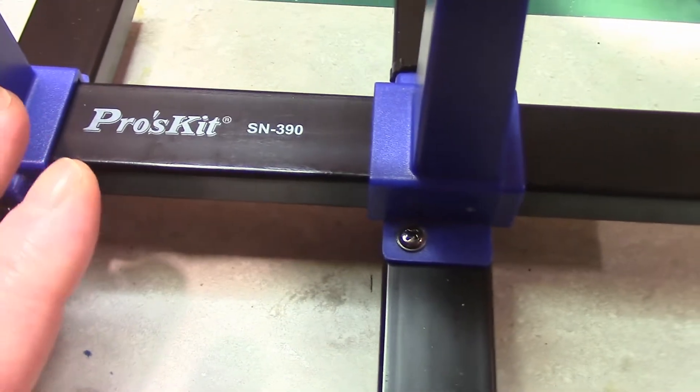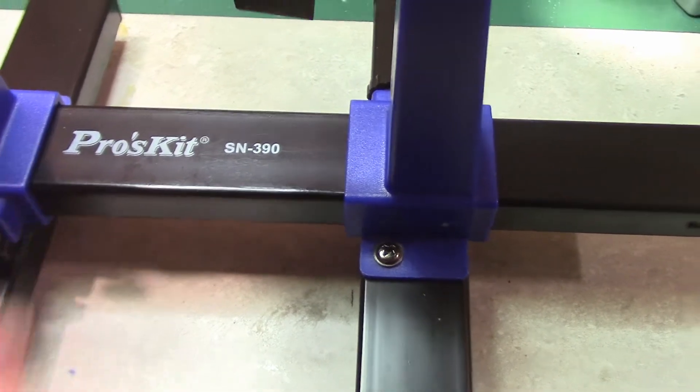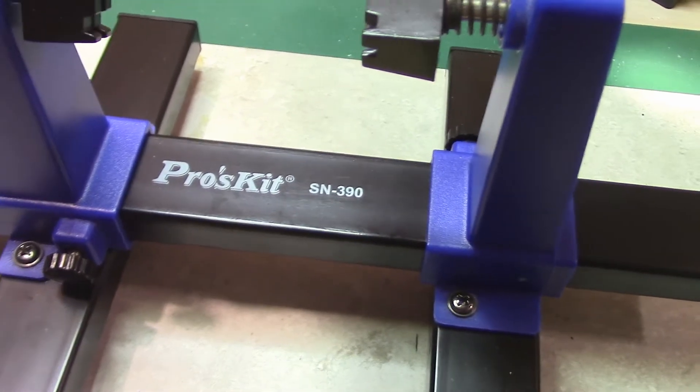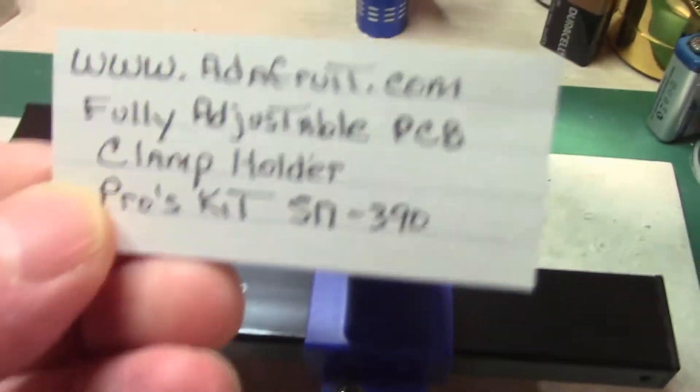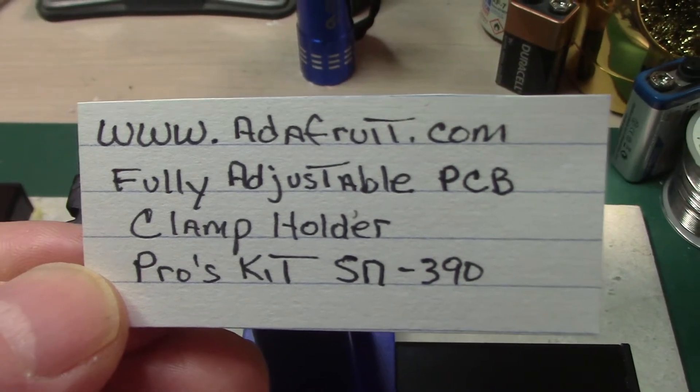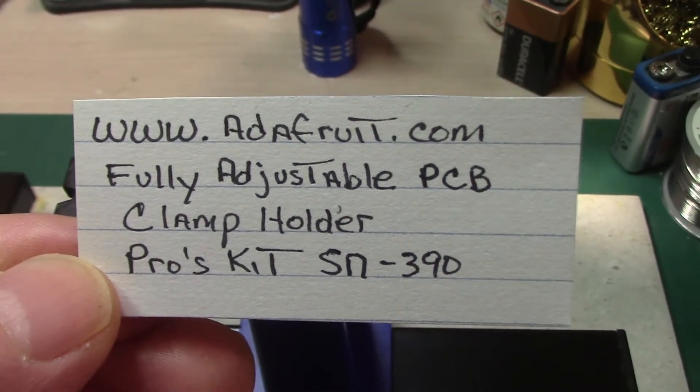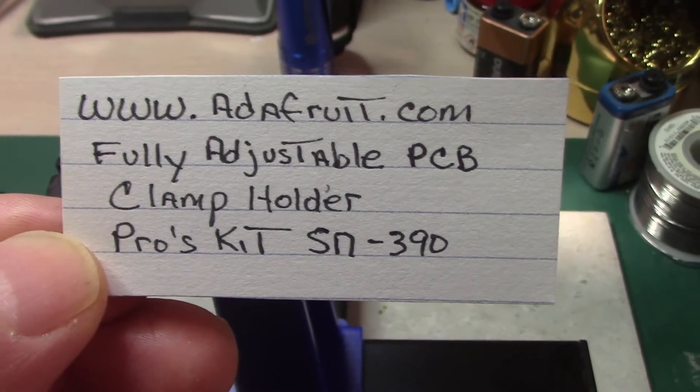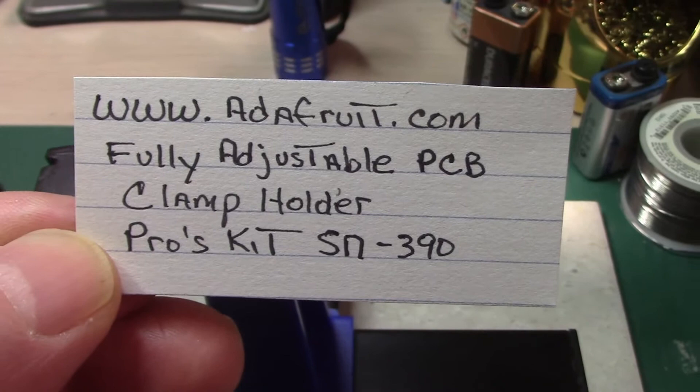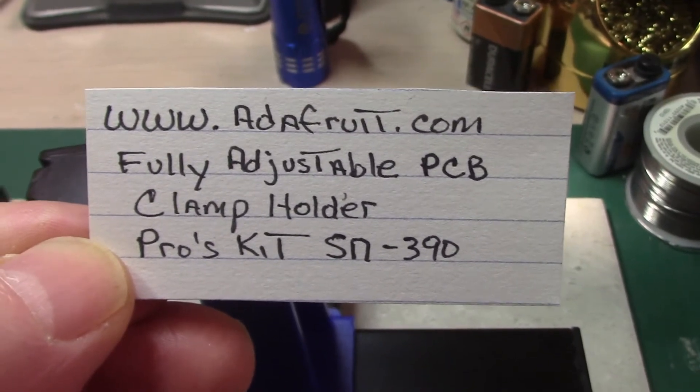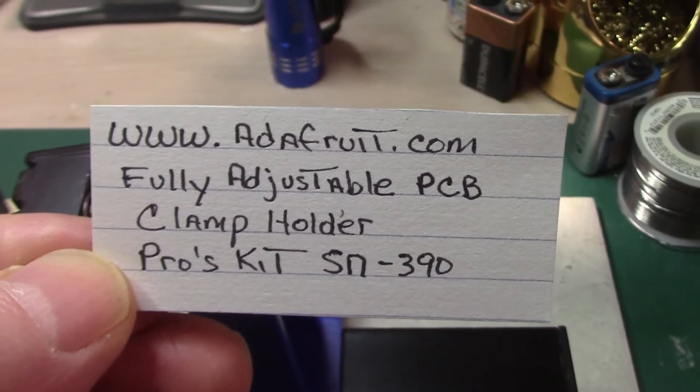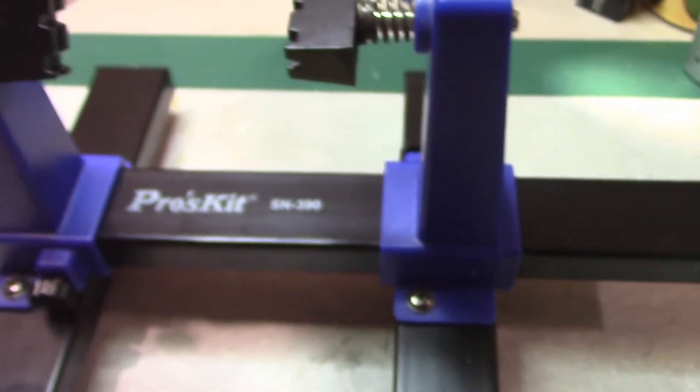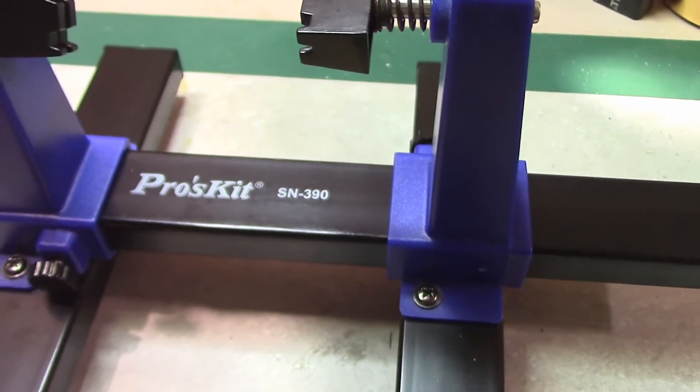I picked this up probably a year or two ago. I'll show this little card here so you can pause it. I picked it up at Adafruit.com. Fully adjustable PCB clamp holder, it's a ProSKit SN-390. So you can pause the camera, pause the video and write that down. Adafruit has them back in stock. They're selling for twenty dollars plus shipping.